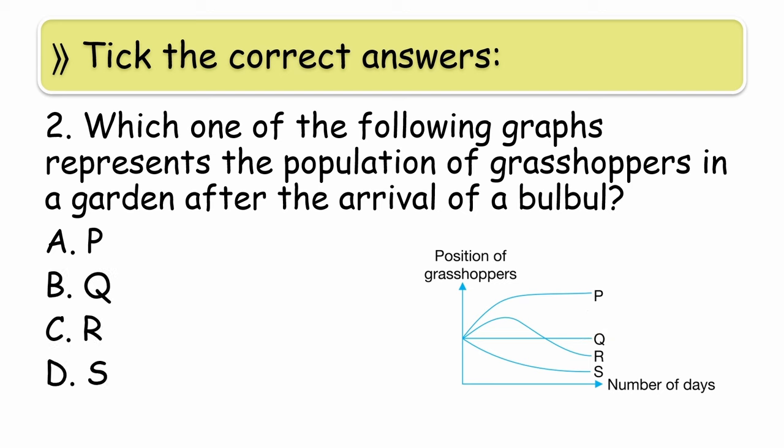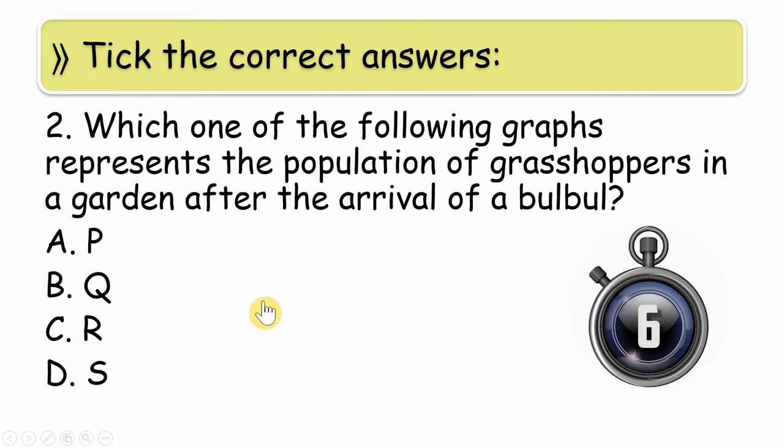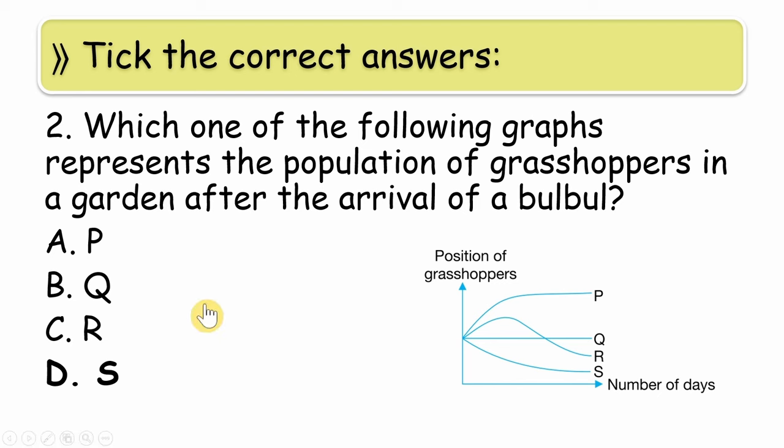The options are different graphs: P, Q, R, S. These are the options given. We need to figure out how the grasshopper population will be affected by bulbul. In this graph, the grasshopper population is increasing, here it first increases then decreases, here it remains constant, and in S what is shown? It will decrease.